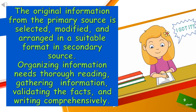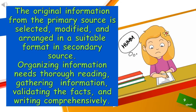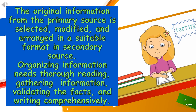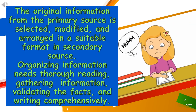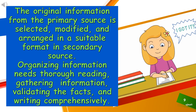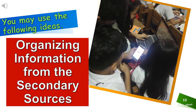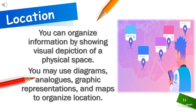Upon knowing the sources of information, you may probably ask: how do we organize the information we got from these sources? The original information from the primary source is selected, modified, and arranged in a suitable format in the secondary source. Organizing information needs thorough reading, gathering information, validating the facts, and writing comprehensively. In organizing information from secondary sources, you may use the following ideas. You can organize information by showing a visual depiction of a physical space. You may use diagrams, analogs, graphic representations, and maps to organize by location.